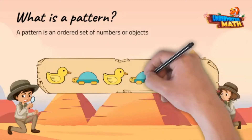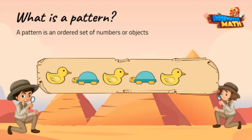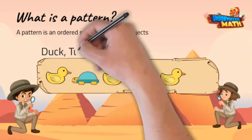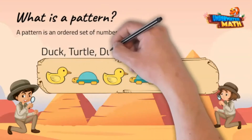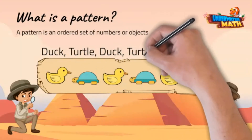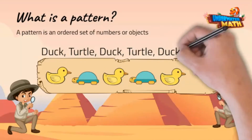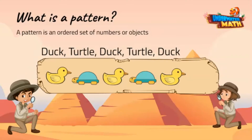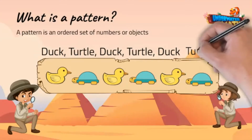Look at the toys and see if you see a pattern. That right there is a duck, turtle, duck, turtle, and a duck. I bet you can predict what toy would come next, Cleo. A turtle.